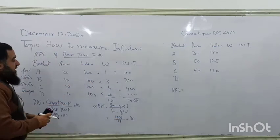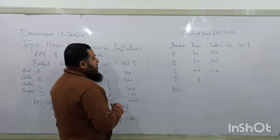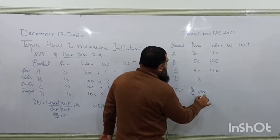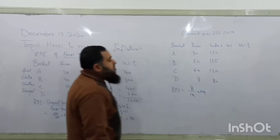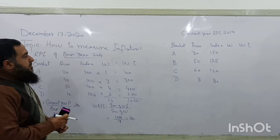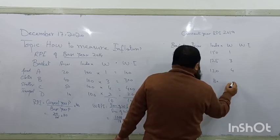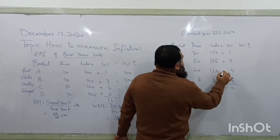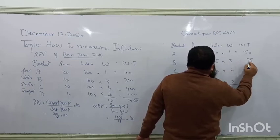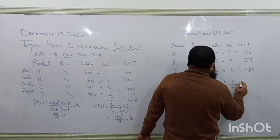For transportation, the price has actually fallen from $10 to $8. The index = (8 ÷ 10) × 100 = 80, which is below 100, showing that transportation prices have fallen compared to the base year. Using the same weights (1, 3, 4, 2), the weighted indices are: 150, 375, 480, and 160.